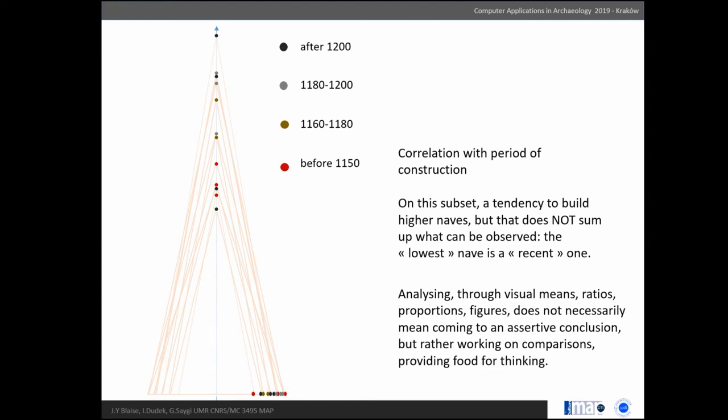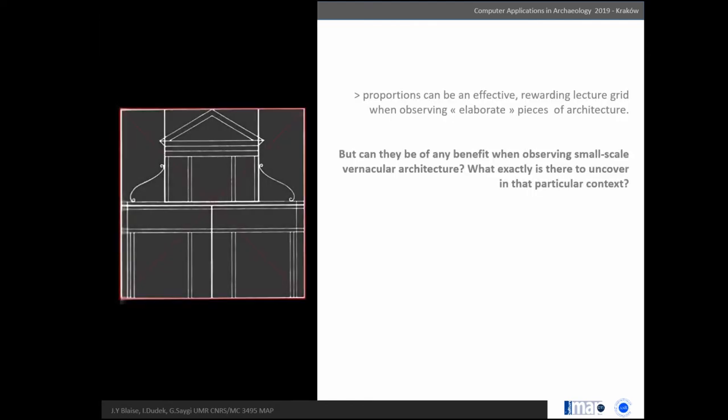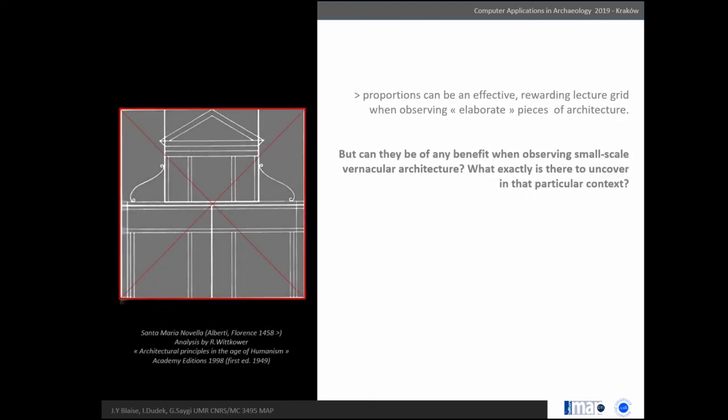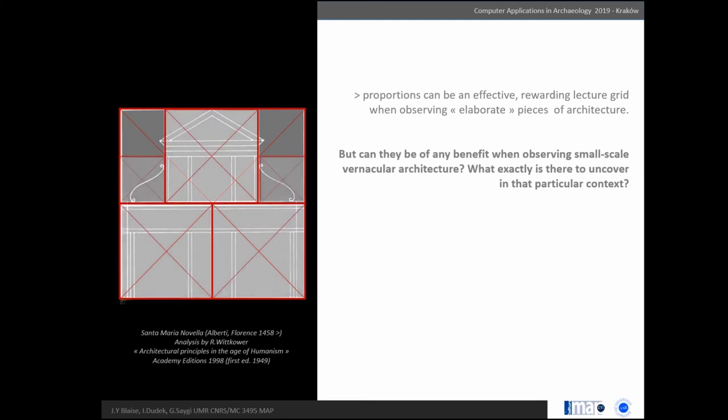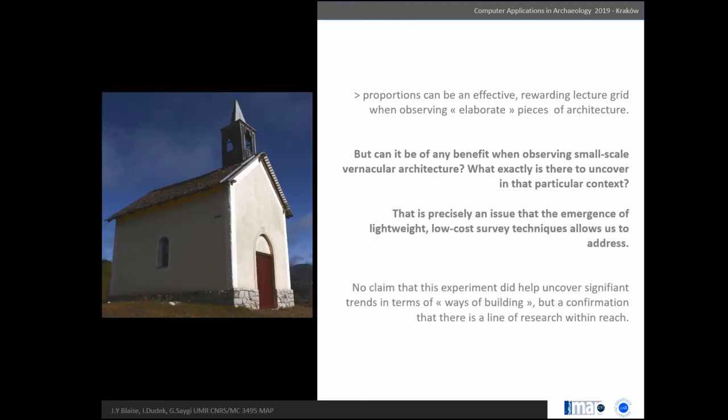Let's come to the experiment itself. What I've shown here is that proportions can be an effective, rewarding lecture grid when observing elaborate pieces of architecture. But can they be of any benefit when observing small-scale vernacular architecture like this? From our point of view, that is precisely an issue that the emergence of low-cost lightweight survey protocols allows us to address.